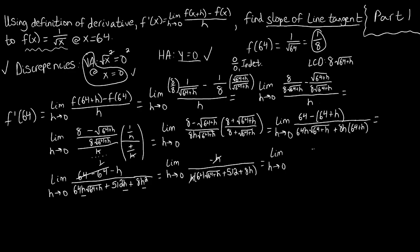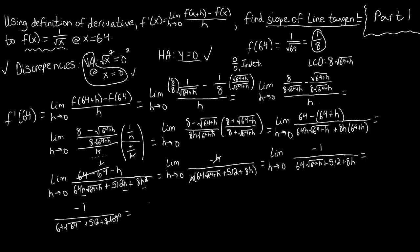Now we pass the limit and plug in 0 for h. We get negative 1 over 64·root(64+0) + 512 + 8·0. The 8·0 term goes away. Root(64) is 8, so we have 64 times 8, which is 512, plus 512, giving us 512 + 512 = 1024 in the denominator. So our limit is negative 1 over 1024.